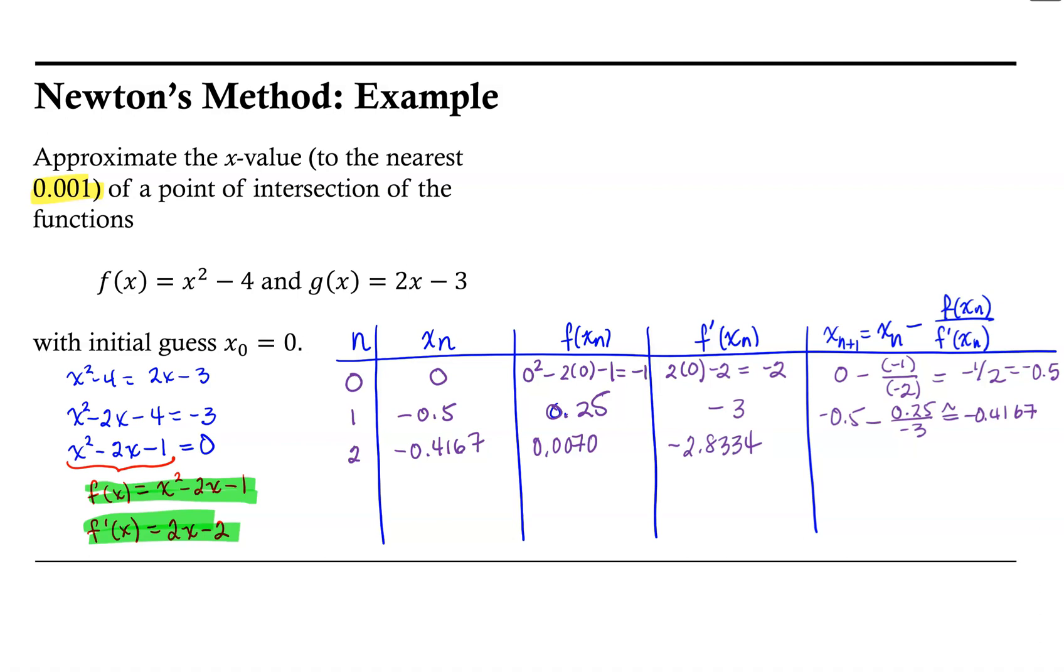So our new x-value we will find using the formula at the top of the last column. We will take -0.4167 minus 0.0070 divided by -2.8334. When we do that, we get -0.4142.